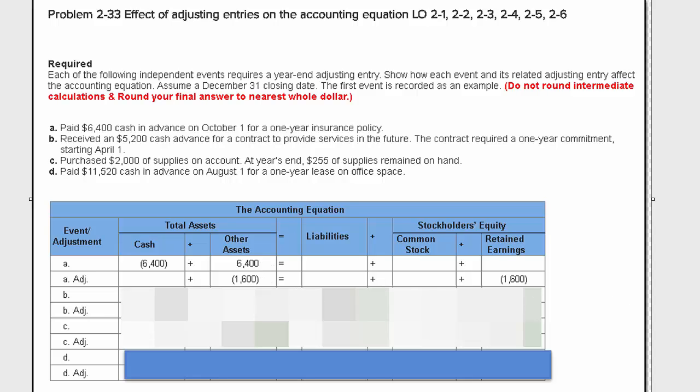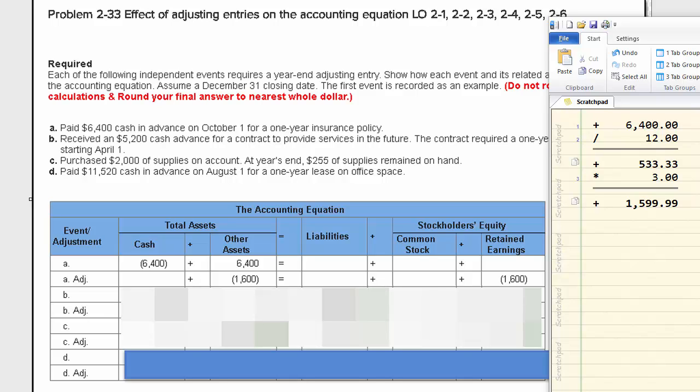And we need an adjusting entry at the end of the year of $1,600. Now I've moved a scratchpad calculator in front of you so you can see how we come up with that $1,600. We paid $6,400. That was the payment. If we divide that by 12, what we determine is that prepaid insurance is being used up at a rate of $533.33 per month.